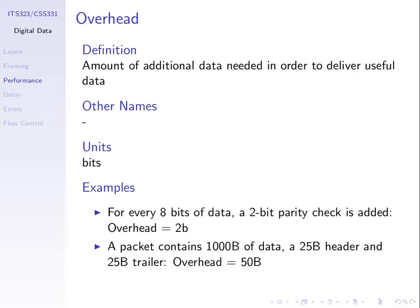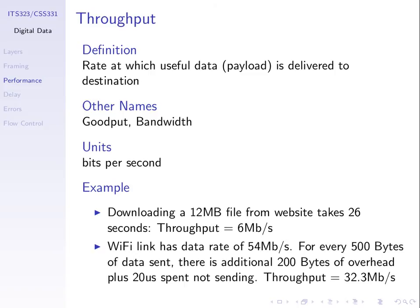Header and trailer in our frames are not actual data, so we count them as overhead — stuff we must send but that doesn't carry our real data. Throughput, instead of just using data rate to talk about speed, indicates the speed at which our real data gets delivered to the destination. We need to take into account overhead and also errors. If data is delivered with an error, it doesn't count toward throughput. Some technologies also cannot be transmitting all the time.